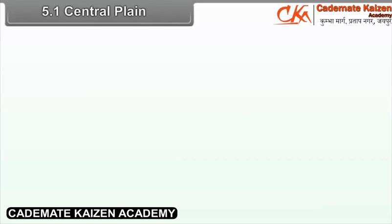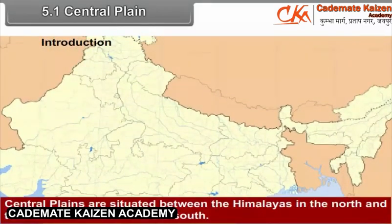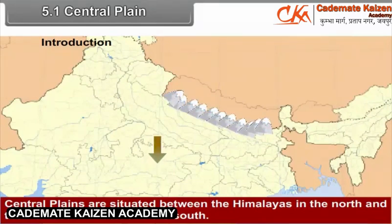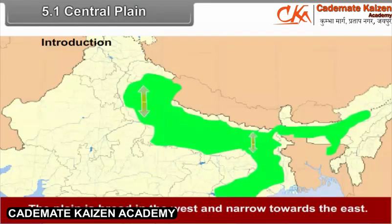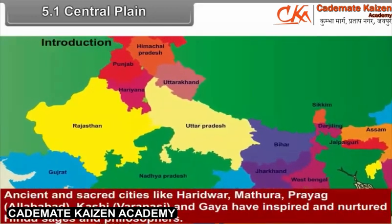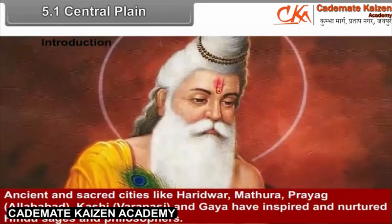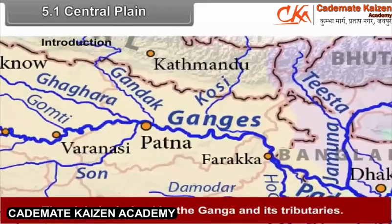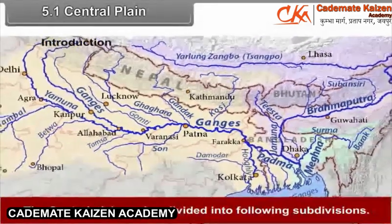5.1 Central Plain — Introduction. Central Plains are situated between the Himalayas in the north and the Peninsular Plateau in the south. It forms a 1050 km long east-west corridor. The plain is broad in the west and narrow towards the east. The Ganga Plain has been the hub of Indian culture. Ancient and sacred cities like Haridwar, Mathura, Prayag, Kashi and Gaya have inspired and nurtured Hindu sages and philosophers. The plain is drained by the Ganga and its tributaries. The Central Plain region is divided into the following subdivisions.